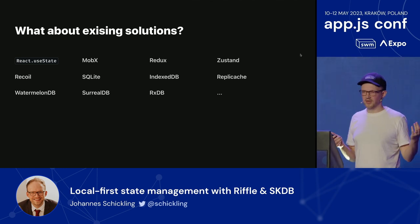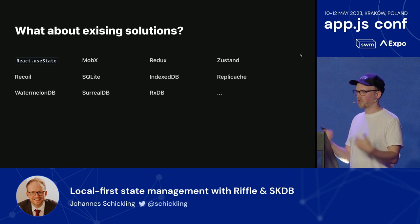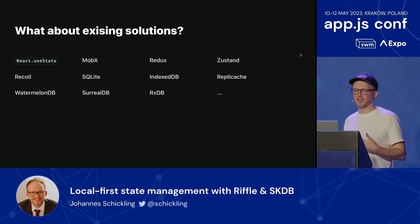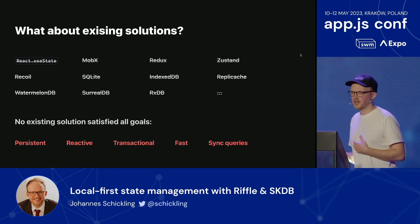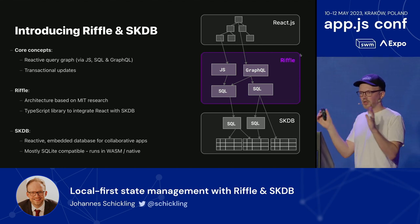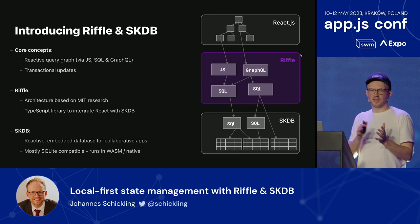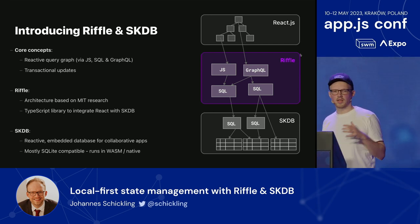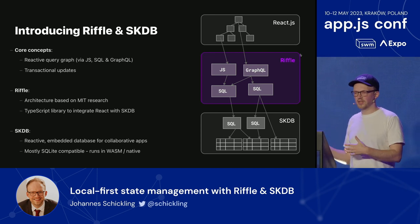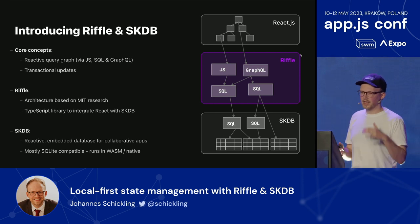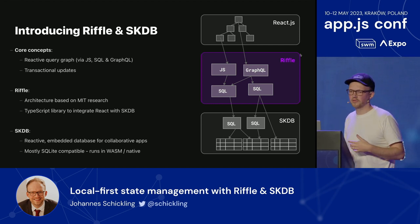What about existing solutions? As mentioned in yet another state management talk, there are a bunch of state management tools out there historically. I think they're all great for their time and still great in many circumstances. But none of those solutions really addressed all of our goals. That's why we built our own. We've built a technology called Riffle and are now integrating it with another technology called SKDB. SKDB is built by brilliant ex-Facebook engineers. It's built in a programming language called Skiplang, runs in Wasm, and runs natively. You can think about it as a smarter SQLite that you can embed in your application. And Riffle is the glue between React and a database like SKDB. That's what we've been incubating over the last two years.